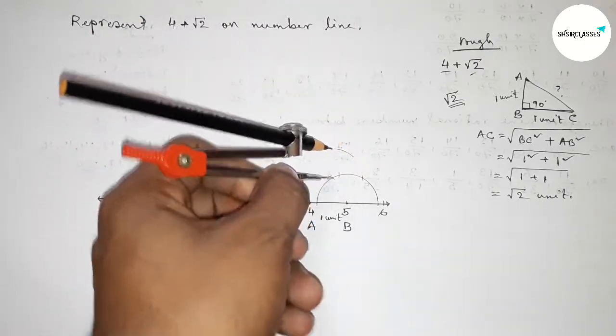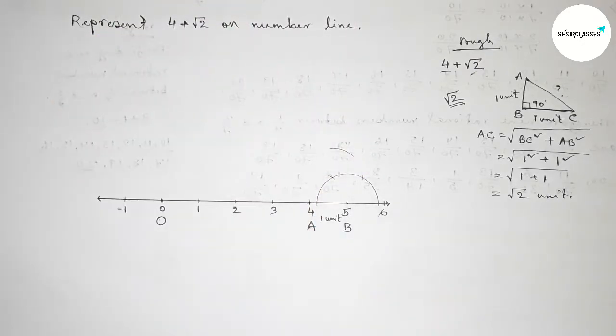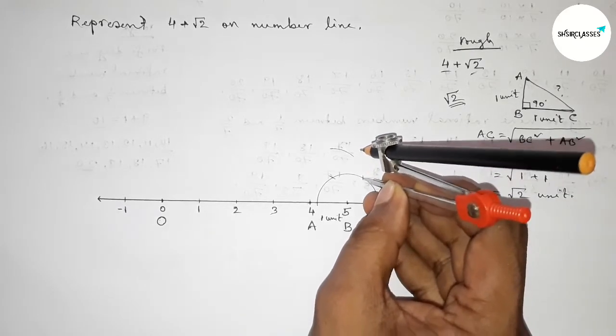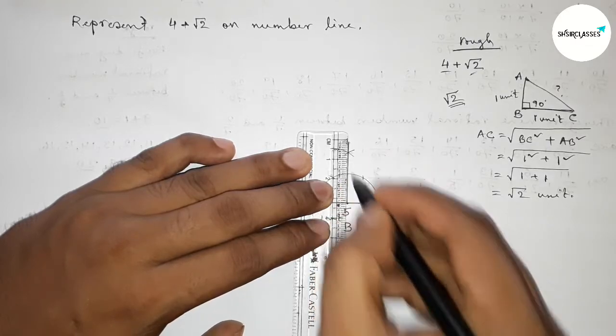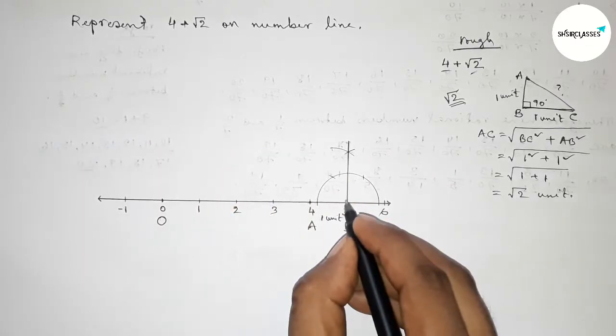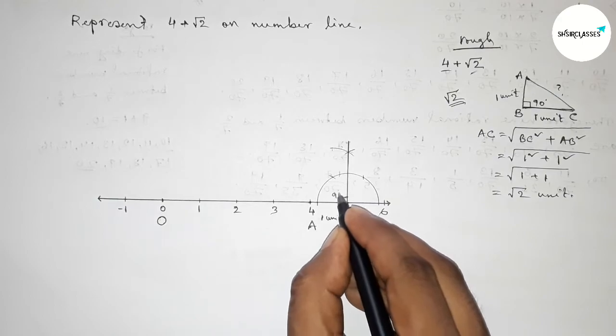Putting the compass here, taking same length and cut here, and putting the compass here and cut here, and drawing an arc here again with same length. Putting the compass here and cut here. Now joining this to get here a 90 degree angle, so we got a 90 degree angle here.